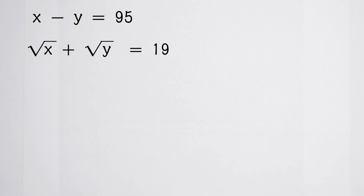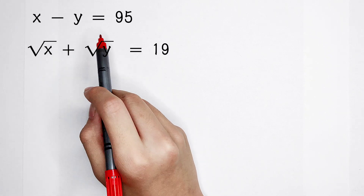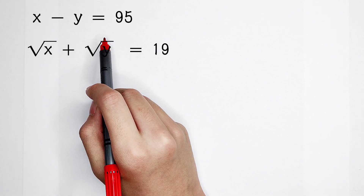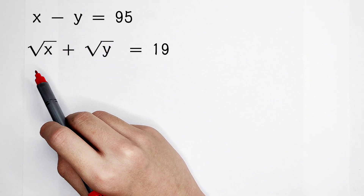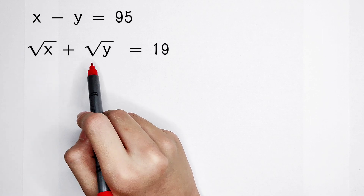Welcome to Math Window. Today we are going to solve this equation about x and y. We are given that x minus y is equal to 95, and the square root of x plus square root of y equals 19.